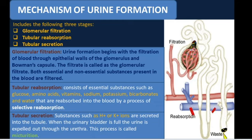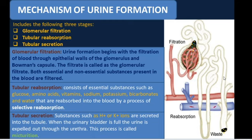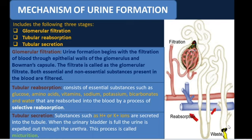The third stage is tubular secretion, where substances like hydrogen and potassium ions are secreted into the tubules as unwanted substances. In the collecting tubule, hydrogen and potassium are secreted. This filtrate is finally known as urine, which is hypertonic - meaning it contains a high concentration of hydrogen or potassium ions. The urine then enters the collecting tubule and proceeds to the urinary bladder, where it is expelled through the urethra.